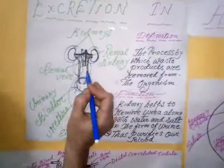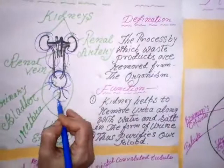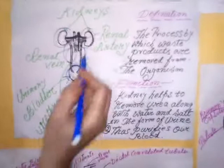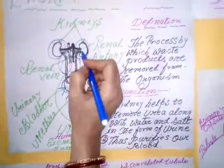The major excretory organ that helps in removing such products from our body is the kidney. A pair of kidneys, along with a pair of ureters and urinary bladder along with urethra, together form the human excretory system. The kidney is a bean-shaped organ located in our abdominal cavity towards the back, just above our waist, one on either side of our vertebral column.